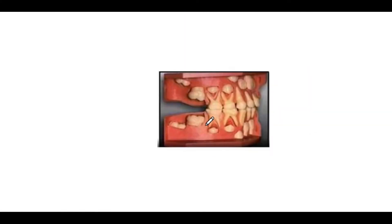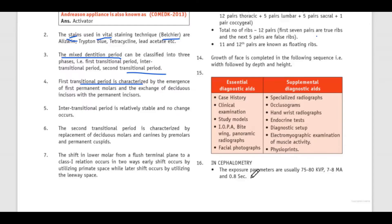Let's see in this picture — this is the first permanent molar, and these are the permanent incisors. So this is the first transitional period.